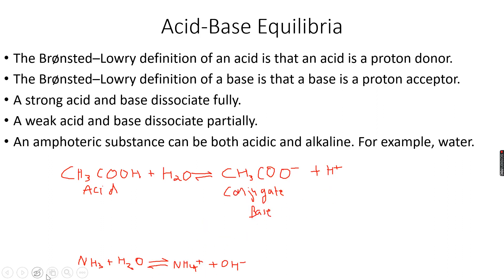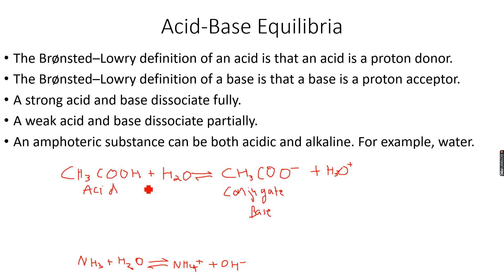When it forms the ethanoate ion, it can accept an H⁺ ion. Ethanoic acid has behaved like an acid because it has donated a proton, but the ethanoate ion — CH3COO⁻ — which results from ethanoic acid, can accept a proton from the hydronium ion to form back ethanoic acid. A proton acceptor is a base, so CH3COO⁻ is a base because it accepts protons. Ethanoic acid is an acid because it donates protons.